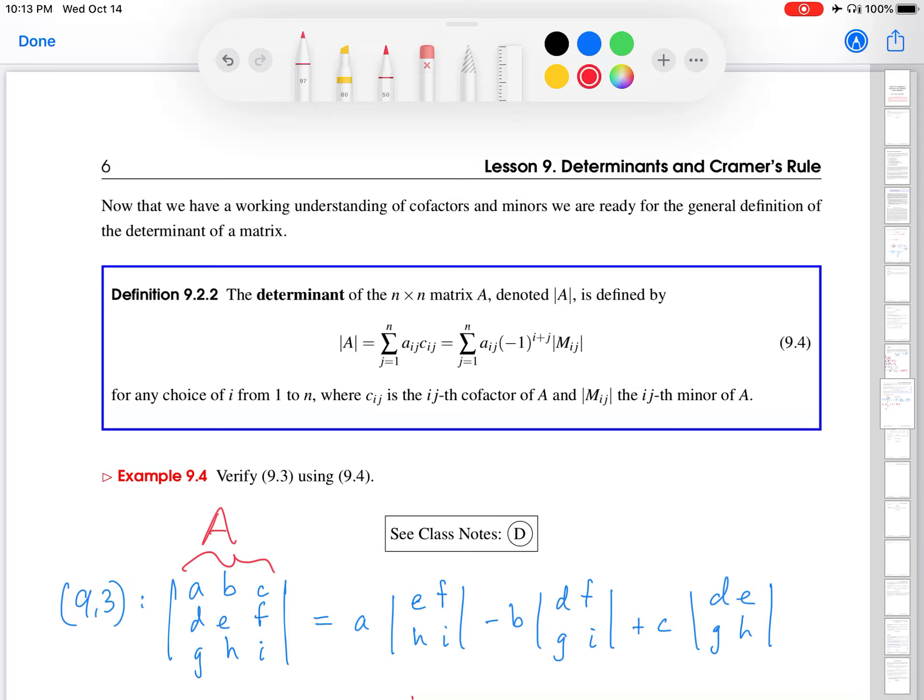And then what is the actual definition? Well, this definition says that determinant equals the sum over all the j's, and in our notation, j means columns. So the sum over all the columns of this product. So what is this product? This product is aij, that's the ijth element of the matrix, times cij, that is the ijth cofactor.